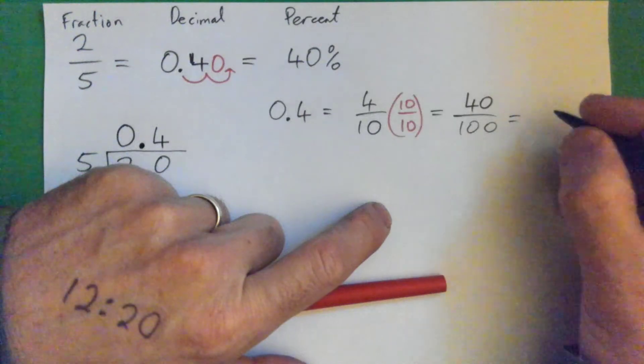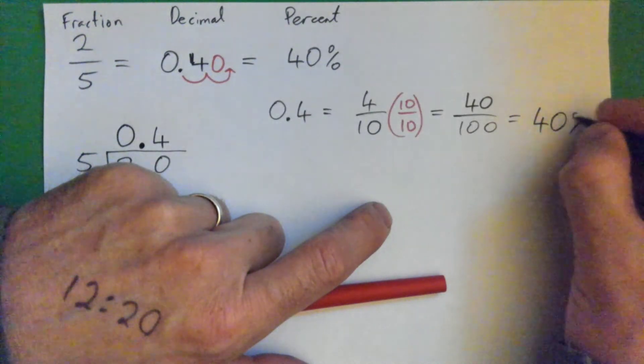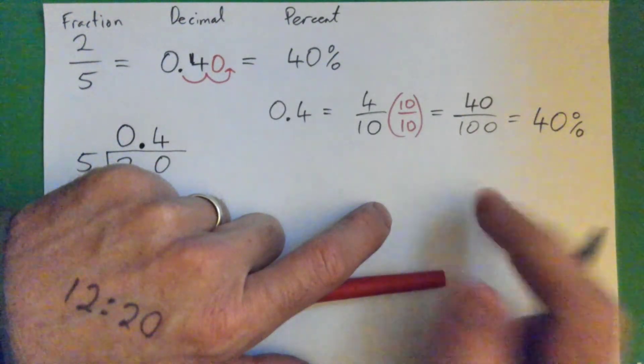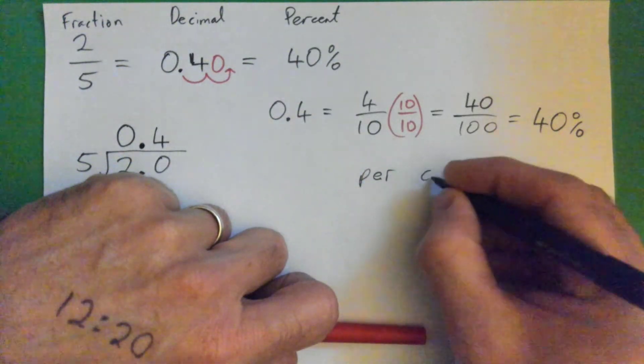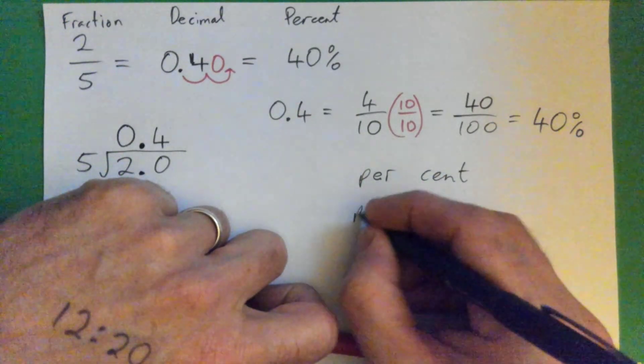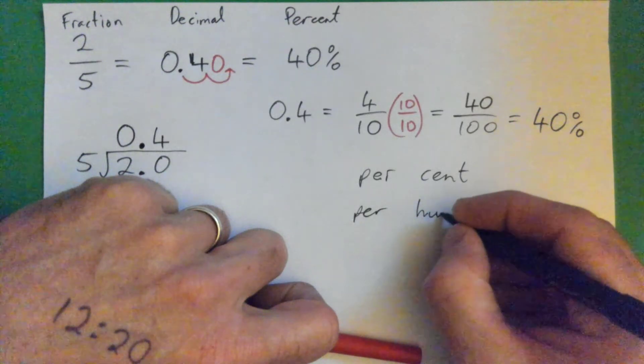And so, that is the definition of 40 percent. It's 40 per hundred. Per cent means per hundred.